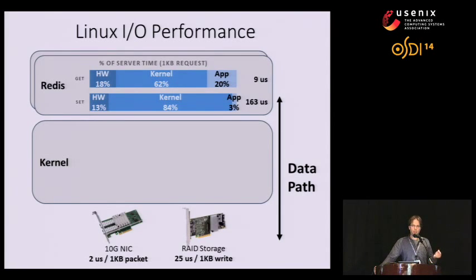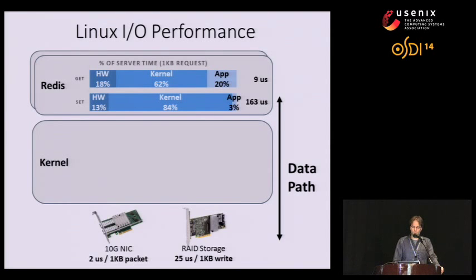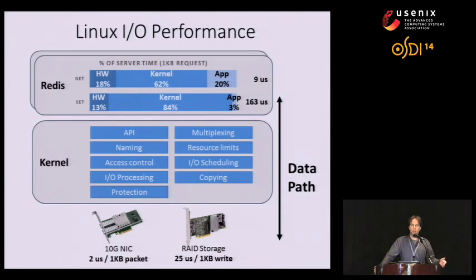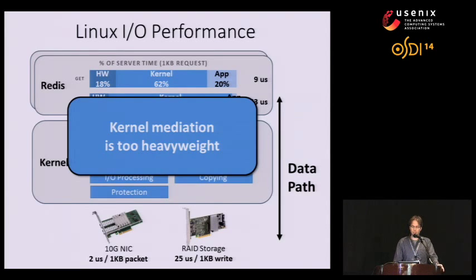To understand why, the kernel is directly on the data path between Redis and the I/O devices, so it must be invoked for each and every I/O operation. The Linux kernel carries out multiplexing of devices to potentially multiple applications, enforces resource limits, carries out I/O scheduling, provides access control, and so forth — all directly on the data path. The takeaway is that kernel mediation is just too heavyweight for the vast performance offered by current data center I/O devices.